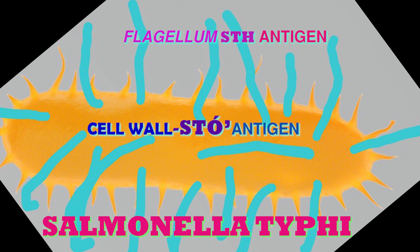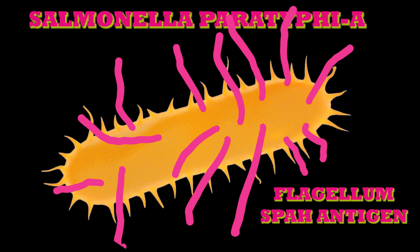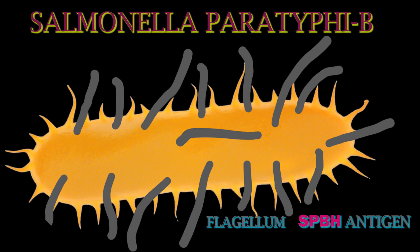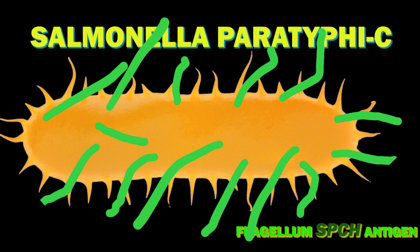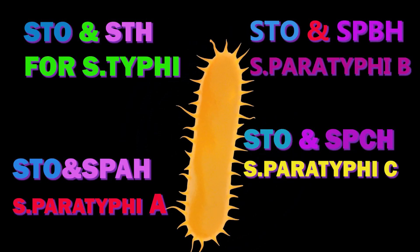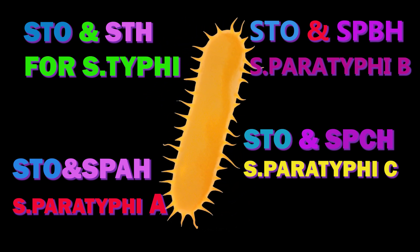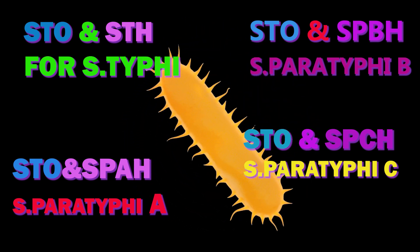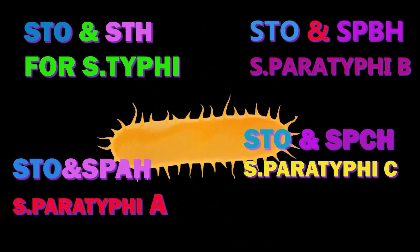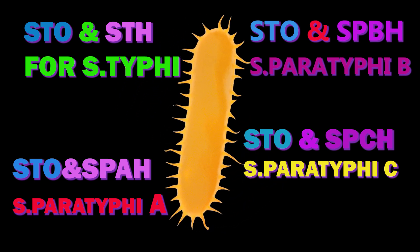The antibodies checked in the Widal test are: Salmonella typhi O (somatic antibodies), Salmonella typhi H (flagellar antibodies), Salmonella paratyphi AH flagellar antibodies, Salmonella paratyphi BH flagellar antibodies, and Salmonella paratyphi CH flagellar antibodies. The Salmonella typhi O somatic antigen used in the Widal test cross-reacts with other Salmonella paratyphi A, B, and C, so individual somatic O antigens are not used for Salmonella paratyphi A, B, and C.